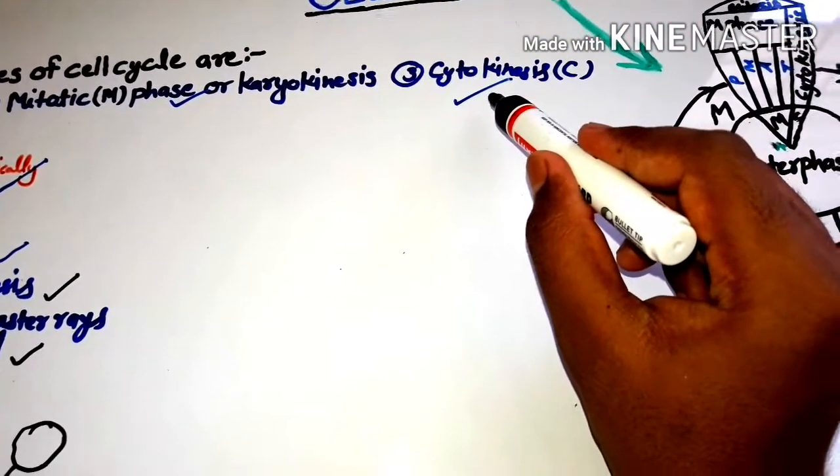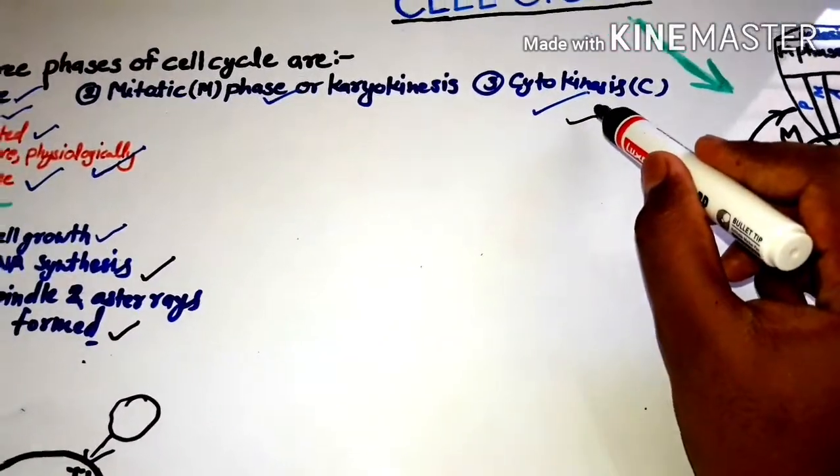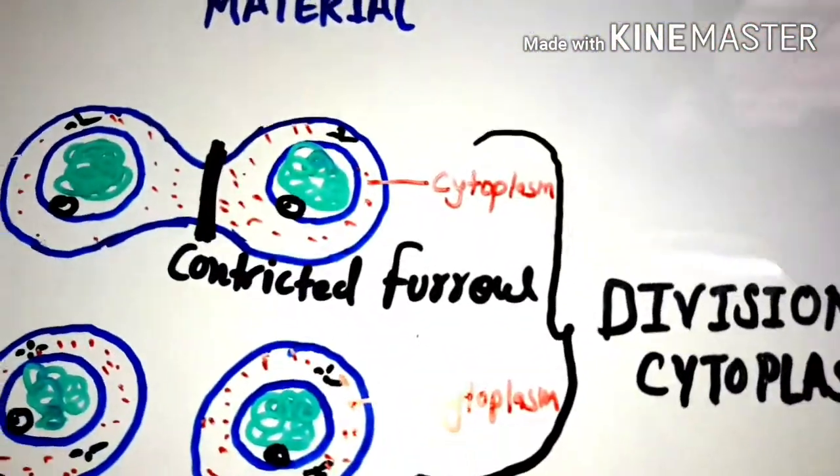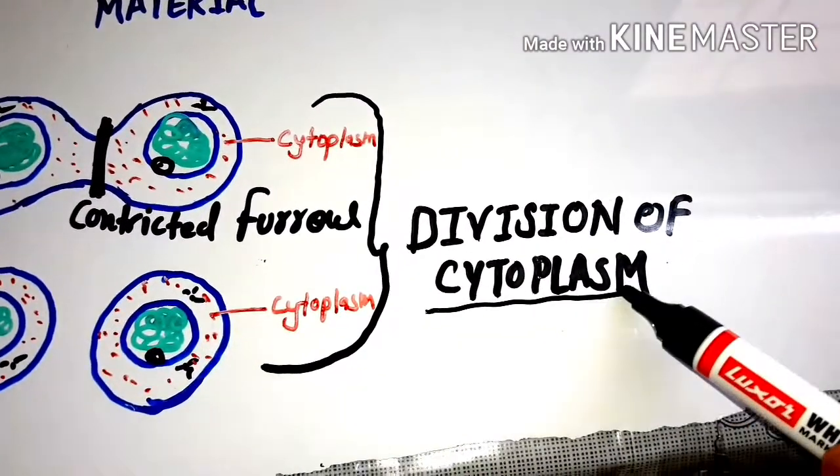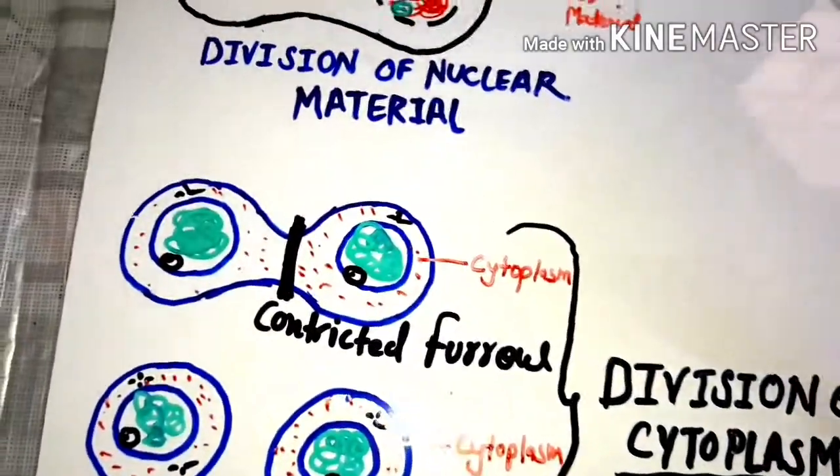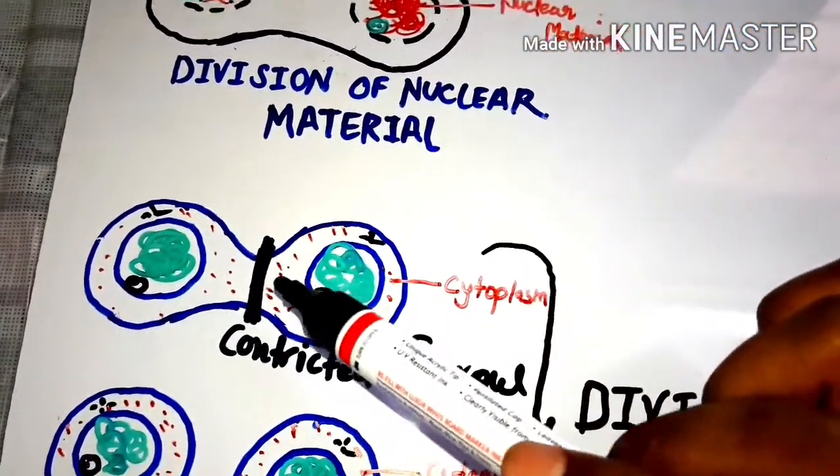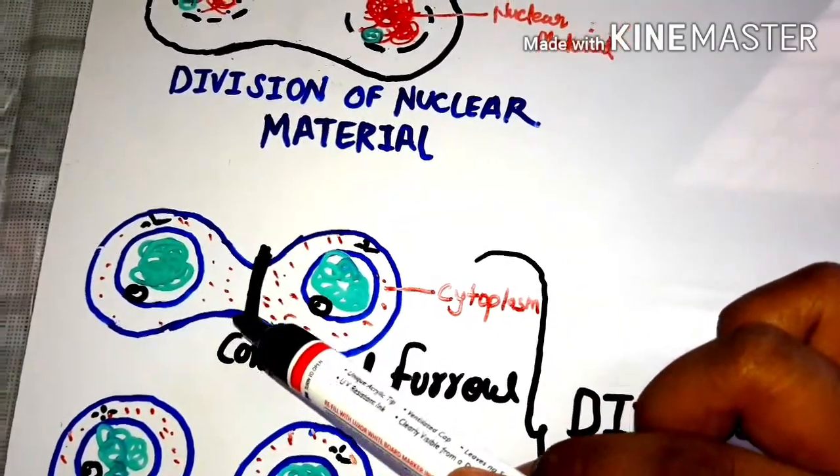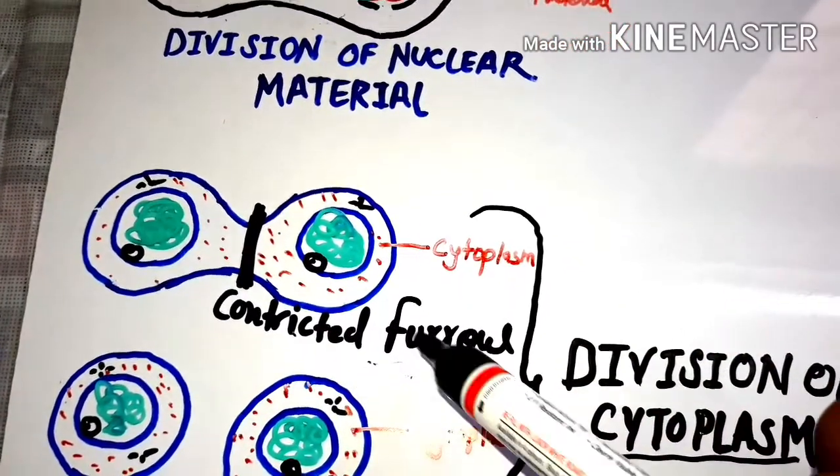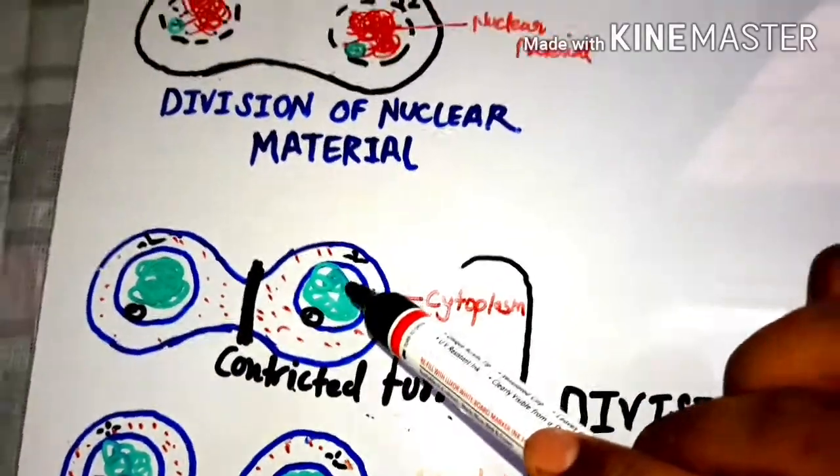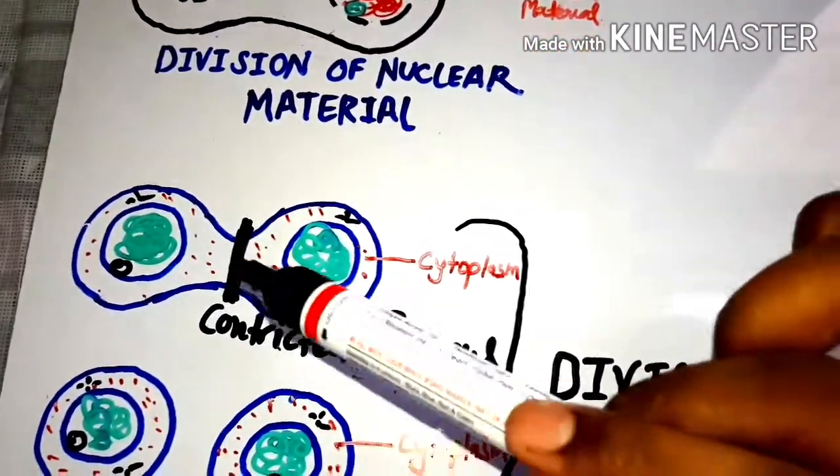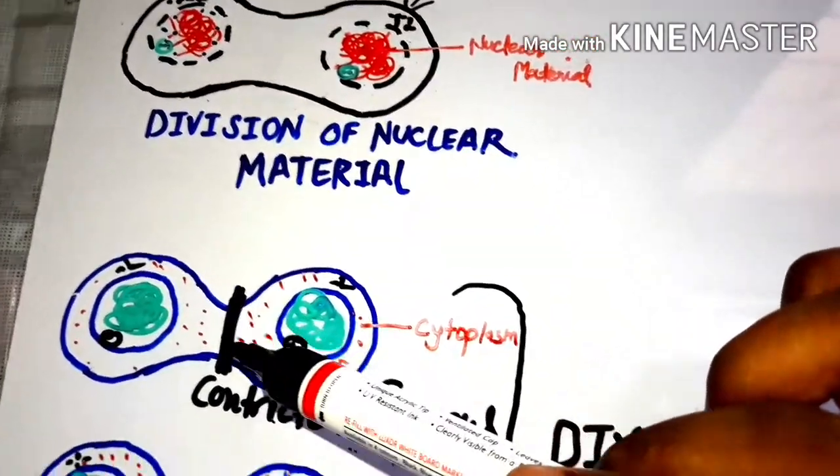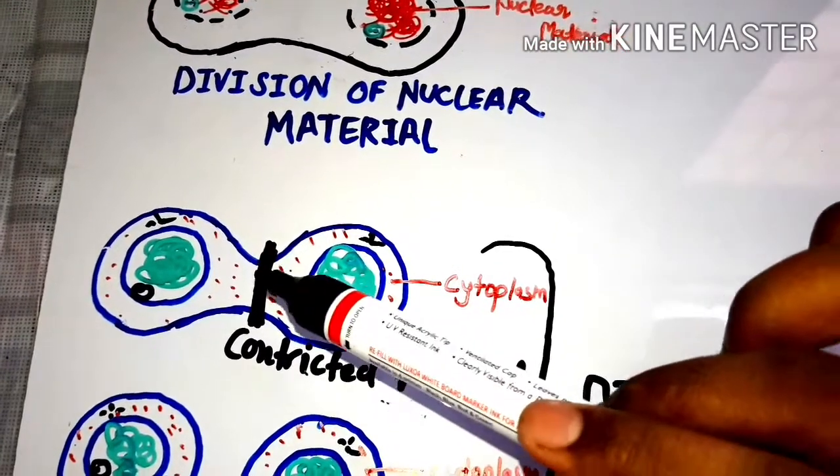Now we come to cytokinesis or C phase, the third phase of the cell cycle. In cytokinesis, division of cytoplasm takes place. This is a cell when a constriction furrow is appearing, and the constriction furrow comes to an end as the cytoplasm is dividing.